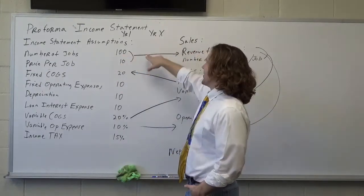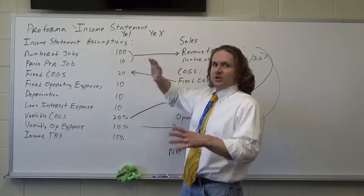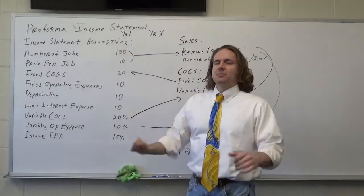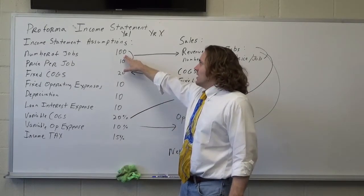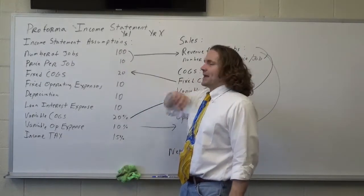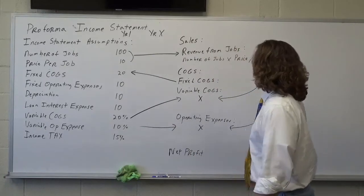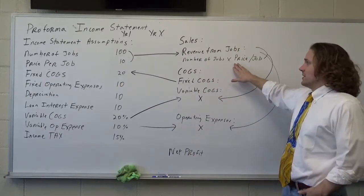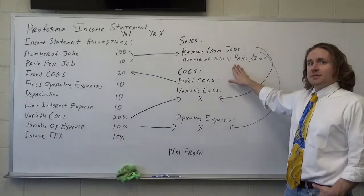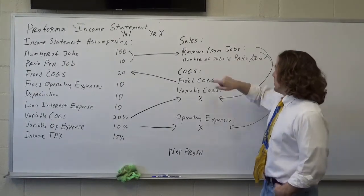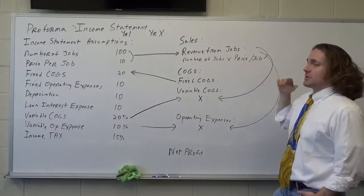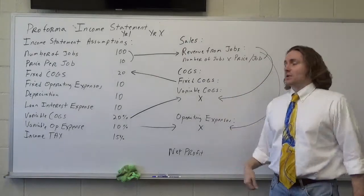Now I can do this for year X as well. I can say it's going to be 100 this year, 200 next year, whatever. But we're keeping this simple for purposes of illustration. So it's going to be 100 jobs, and I'm going to get paid $10 per job. So all I want to do is come over here to my proforma income statement, which you can do in Excel or whatever. And I'd say my revenue from jobs next year will be the number of jobs times the price per job based on what I think it will be.